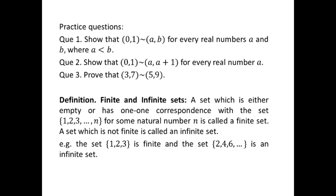Next is the definition of finite and infinite sets. A set which is either empty or has a one-to-one correspondence with the set {1, 2, 3, ..., n} for some natural number n is called a finite set. For example, the set {1, 2, 3} and the set {1, 2, 3, ..., 10} are finite sets. A set which is not a finite set is called an infinite set.